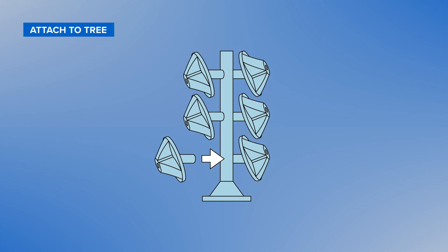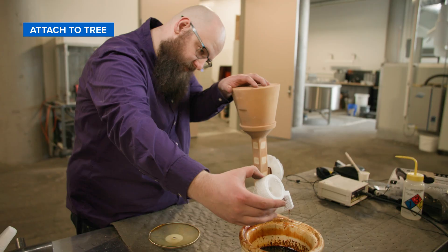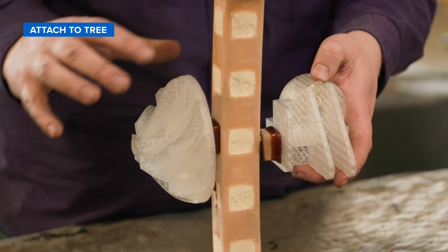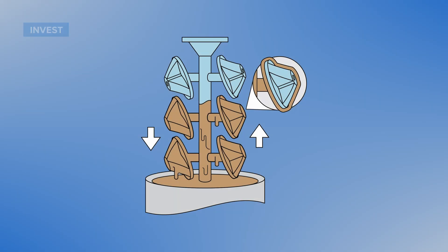Connect the pattern onto the casting tree. Dip your casting tree into an investment slurry as you would with a wax pattern.